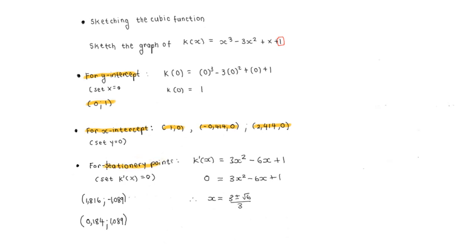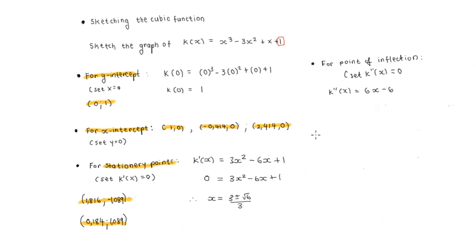For the point of inflection, we set k″(x) equal to 0. Taking k″(x) from k′(x) gives us 6x minus 6. Setting this equal to 0: 6 equals 6x, therefore x equals 1. When x equals 1, y equals 0. So our point of inflection is at (1, 0), which is also one of our x-intercepts.